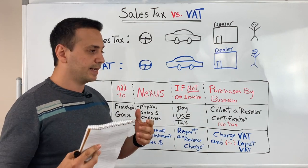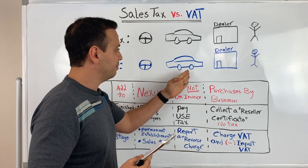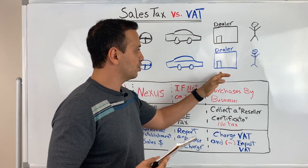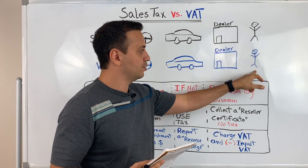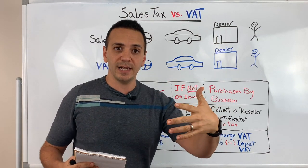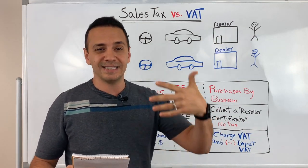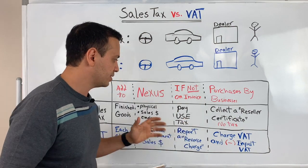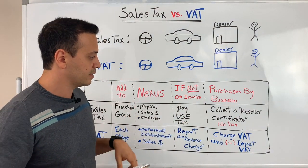We'll go through the example of sourcing the parts of the vehicle, then assembly of the vehicle, and then selling the vehicle to a dealer which then turns around and sells it to the end consumer. Once we go through that, you'll understand the invoicing process and when the tax gets added to an invoice. After that, we'll walk through some of the main differences between the two types of tax.